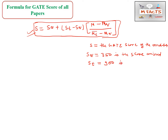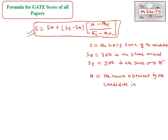St equals 900, and this is also assigned for M̄t. The M value is the marks obtained by the candidate in that paper — the marks obtained by the candidate in the paper in which the candidate appeared.